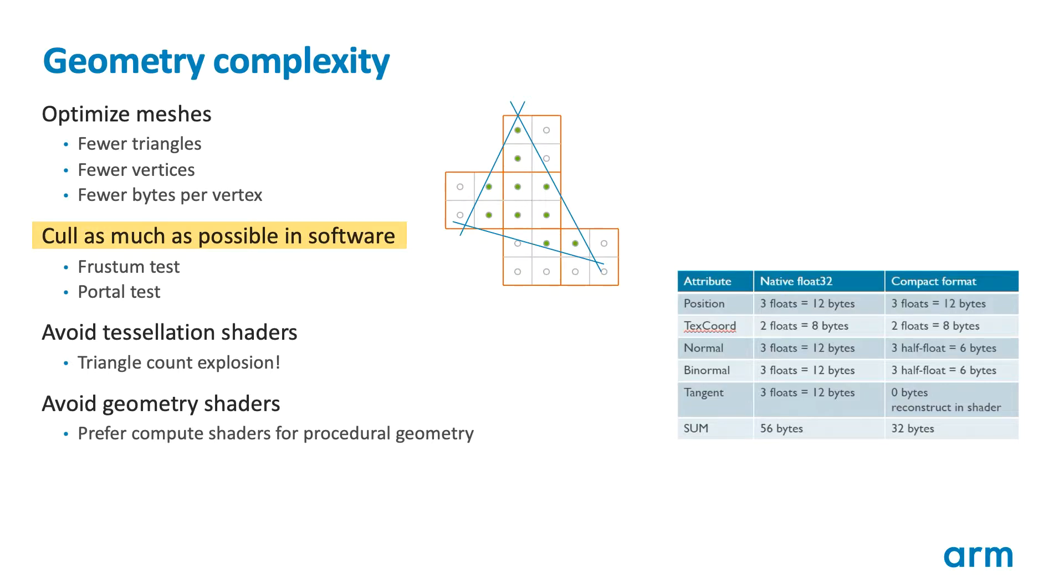We have already talked about the importance of application culling as a means to reduce draw call counts. The same techniques are also useful for reducing the vertex count processed by the GPU. The most important thing to remember is that GPUs have no knowledge of your scene. So if you pass a million out-of-camera vertices, they are all going to be processed so the GPU can determine their position before they can be culled. This can add up to a huge amount of redundant processing.